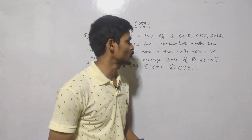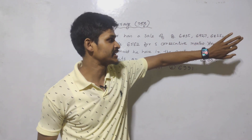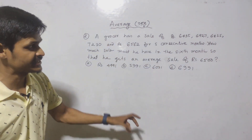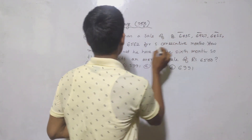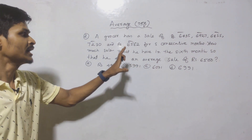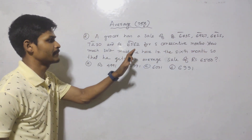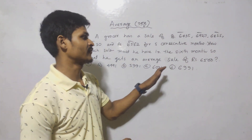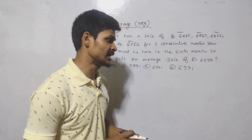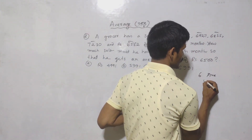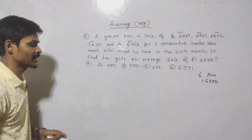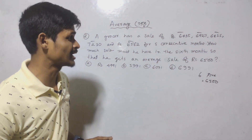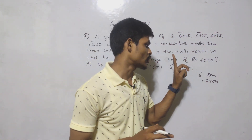Next question: a grocer has sales of Rs. 6435, Rs. 6927, Rs. 6855, Rs. 7230, and Rs. 6562 for five consecutive months. How much sale must the grocer have in the 6th month so that the average sale is Rs. 6500? Average equals sum of terms divided by total number of terms, so average multiplied by total number of terms gives us the required total sum.